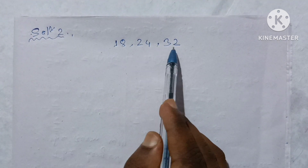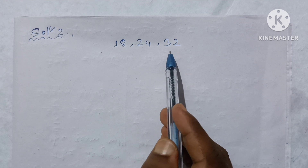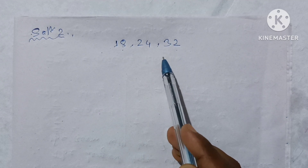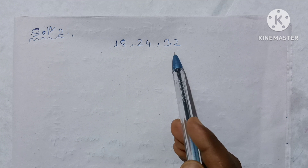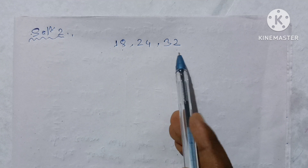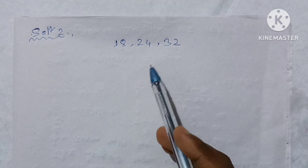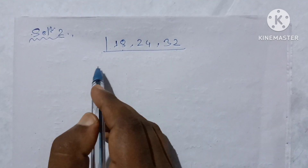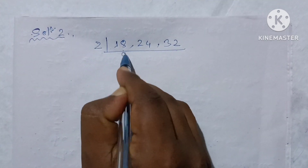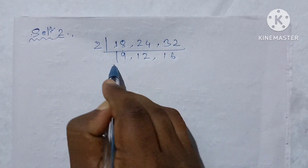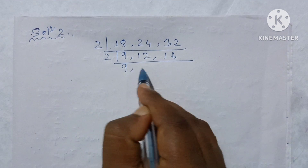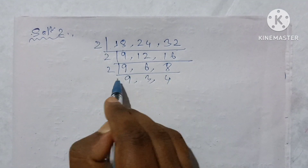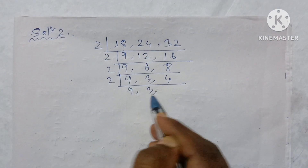If you want to find this number, you need to use LCM. Using LCM will give us the result. The LCM is the lowest common multiple of 18, 24, and 32.